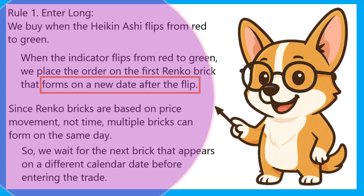Let's break down the rules that ChatGPT and I came up with for this strategy. Rule 1: Enter long. We buy when the Heikin Ashi flips from red to green. When the indicator flips from red to green, we place the order on the first Renko brick that forms on a new date after the flip. Since Renko bricks are based on price movement, not time, multiple bricks can form on the same day. So we wait for the next brick that appears on a different calendar date before entering the trade.